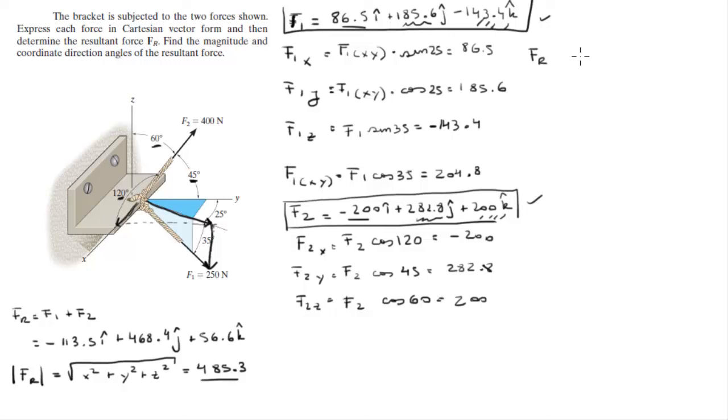With this number we can use to find the coordinate direction angles, which can be found by doing the cosine inverse of their respective values divided over the magnitude of the resultant force, cosine inverse of Y over FR, and cosine inverse of Z over FR. This is X, this is Y, this is Z, and this is FR. When you plug the numbers into these equations...